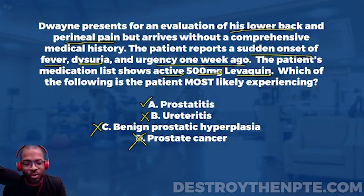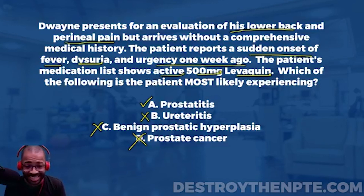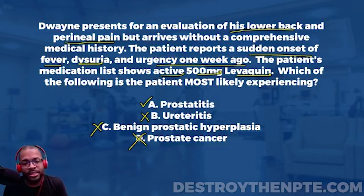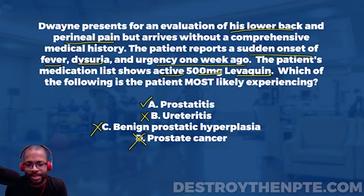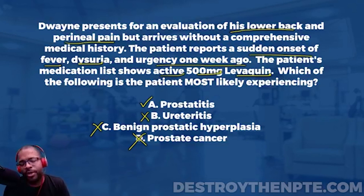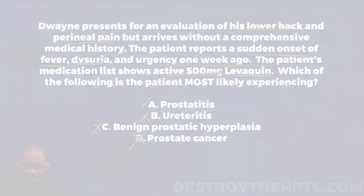Congratulations to those who got this correct — it was not easy. If you have trouble with GU pathologies, it's about getting more repetitions with these concepts so the information is more easily retrieved. For some of it, you'll also need a good mnemonic to help you out on the NPTE.